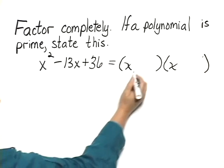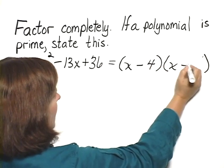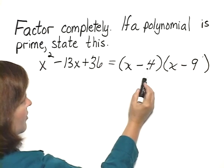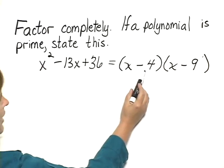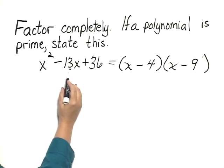We can see that the numbers we want are negative 4 and negative 9, because negative 4 times negative 9 is positive 36. Negative 4 plus negative 9 is negative 13.